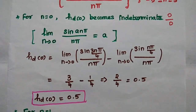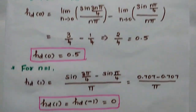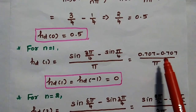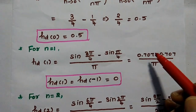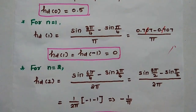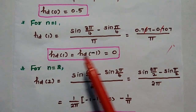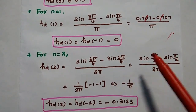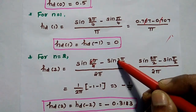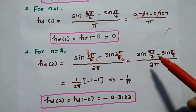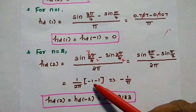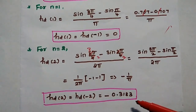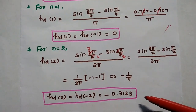For n=1, substituting into the equation: hd(1) = [sin(3π/4) − sin(π/4)] / π = [0.707 − 0.707] / π = 0. So hd(1) = hd(−1) = 0, since it is a symmetric filter. For n=2: hd(2) = [sin(6π/4) − sin(2π/4)] / (2π) = [sin(3π/2) − sin(π/2)] / (2π). Sin(3π/2) = −1 and sin(π/2) = 1, giving (−1 − 1)/(2π) = −1/π. So hd(2) = hd(−2) = −0.3183.